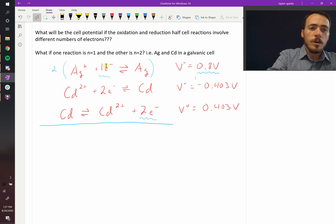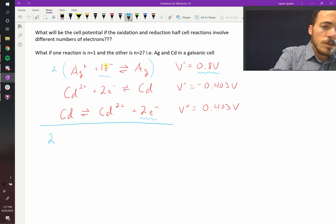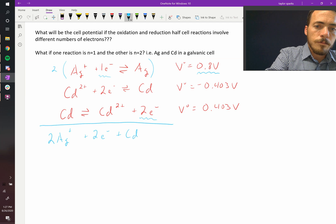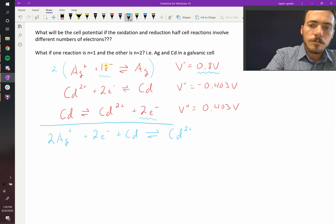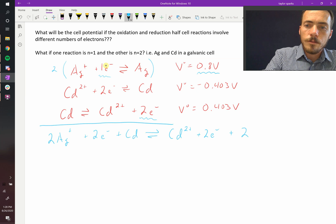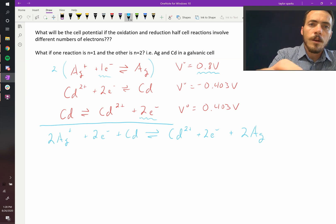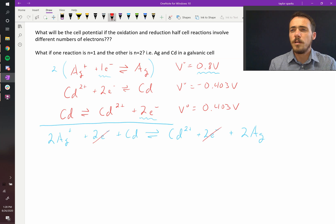Anyways, we multiply this by two and we get this following equation: 2Ag+ + 2e- + Cd yields Cd2+ + 2e- + 2Ag. We see that the electrons now cancel on both sides of the equation, and we can go ahead and figure out the cell potential for this reaction.